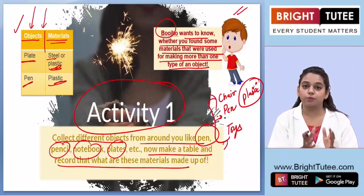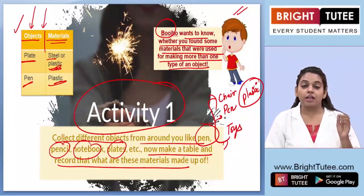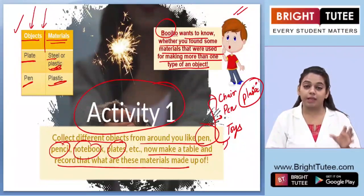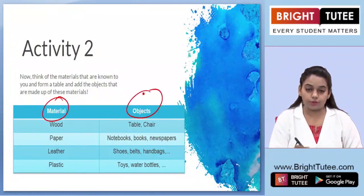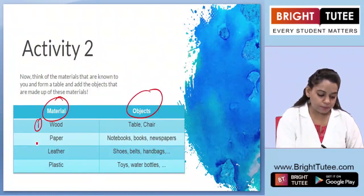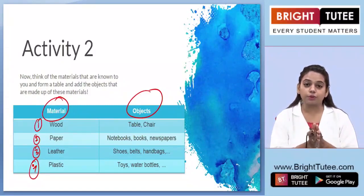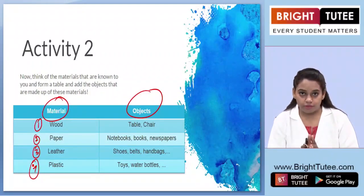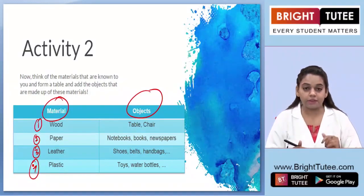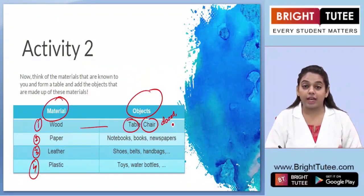You can help our friend with many more examples and figure out that there are a large number of objects that can be made using the same material. In this activity, you will first mention the materials known to you — these may include wood, paper, leather, plastic, steel, iron, gold, or any other metal — and then figure out the objects made using these materials.